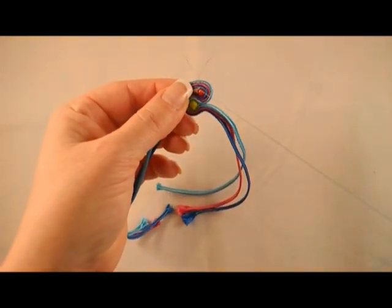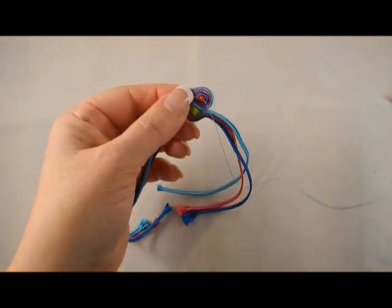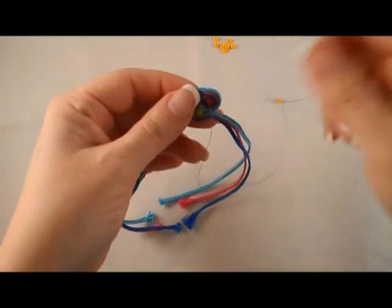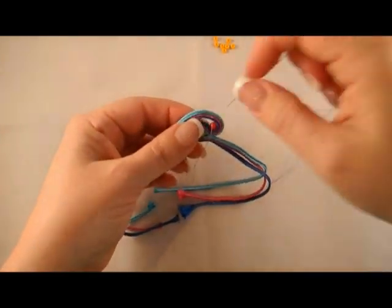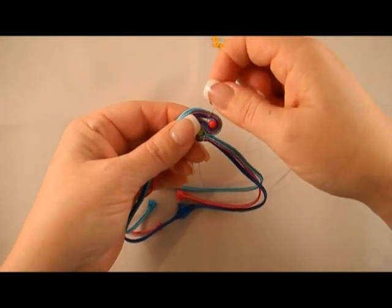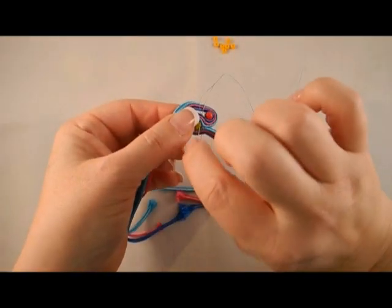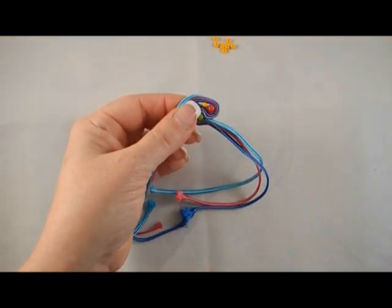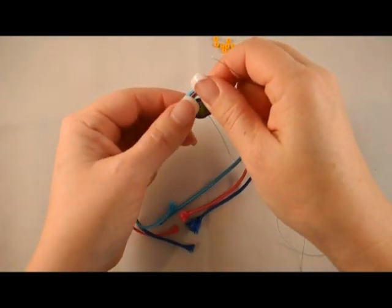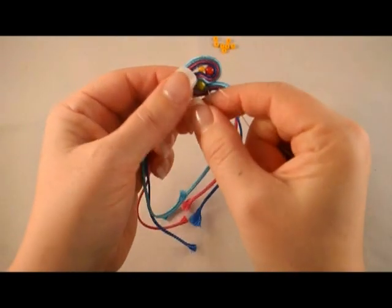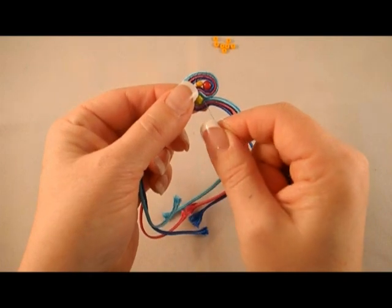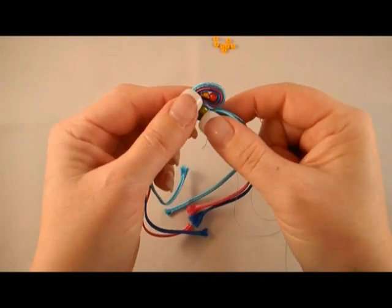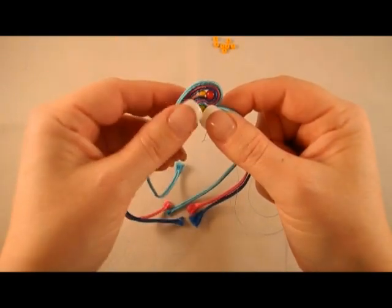Now I'm going to add some of the size 6 seed beads. I pick up one. My thread is coming out of the inside of the curve from the outer layer. And I stitch through the three layers that are closest to the center bead.